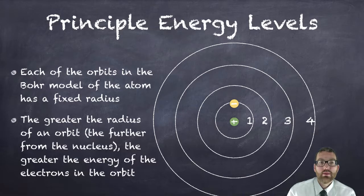The greater the radius of an orbit, the further it is from the nucleus. So principal energy level 4 here is further away from the nucleus in the middle, that green positive sign, than principal energy level number 1.